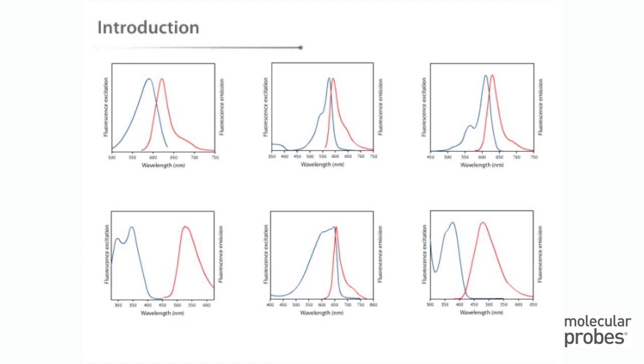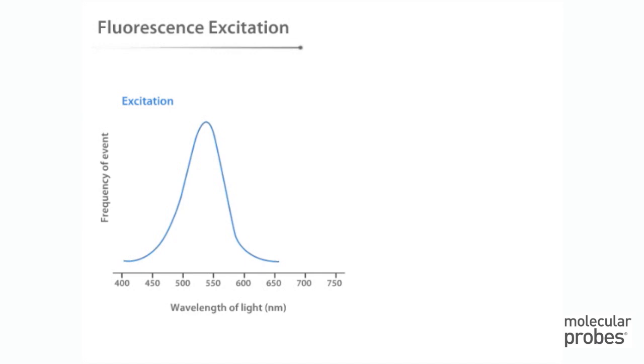Understanding this information is an important step in understanding the phenomenon of fluorescence. A fluorophore is excited most efficiently by light of a particular wavelength. This wavelength is the excitation maximum for the fluorophore.